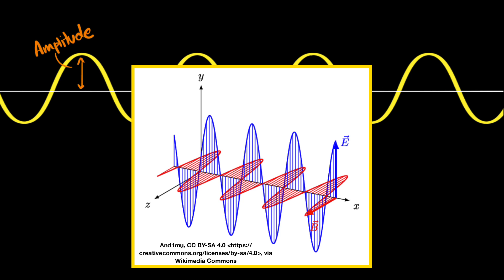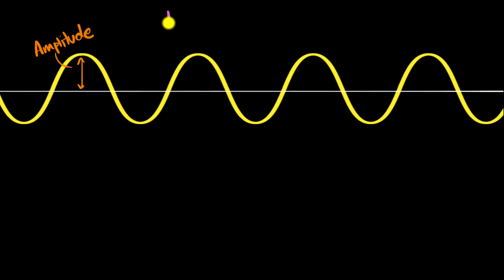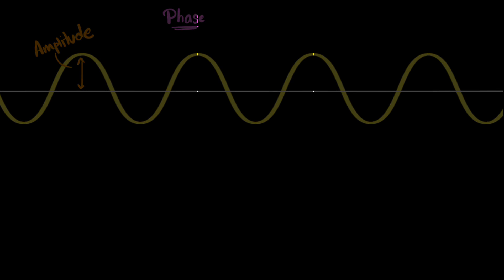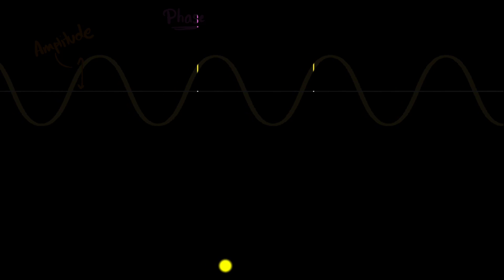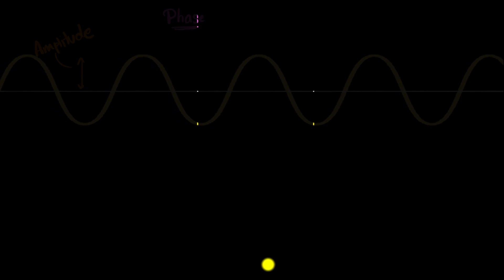Another important feature of a wave is what we call its phase. It's easier to understand phase by looking at just two specific points on a wave. Let's compare only those two points and see what happens as the wave moves to the right. Notice they start oscillating — they go up and down.